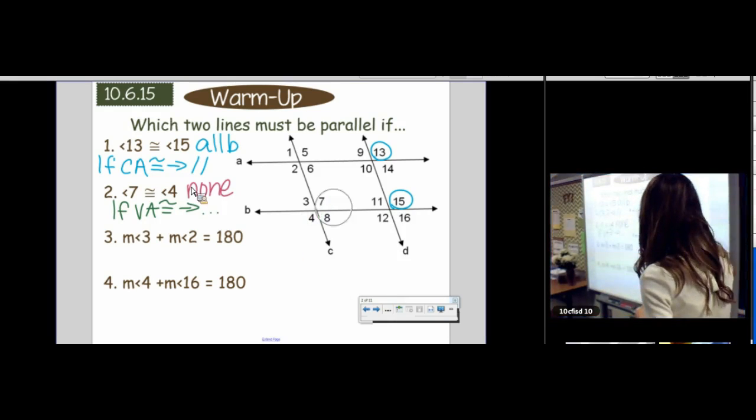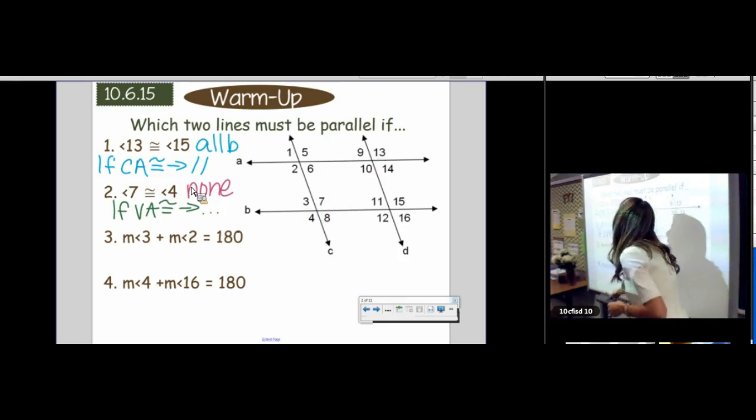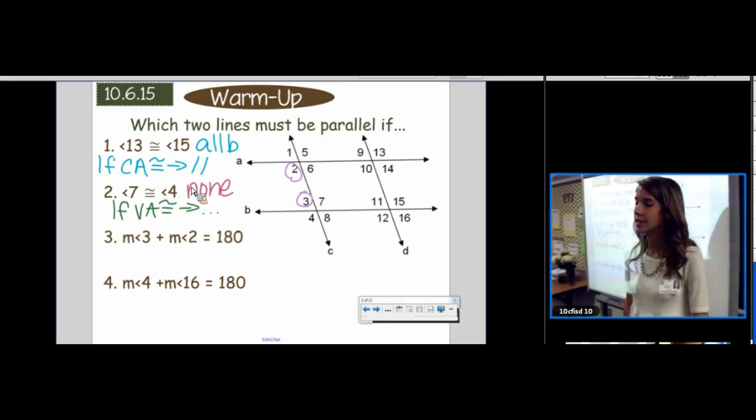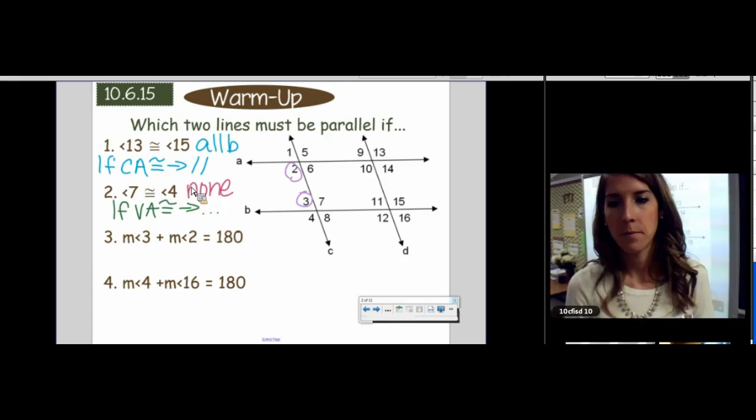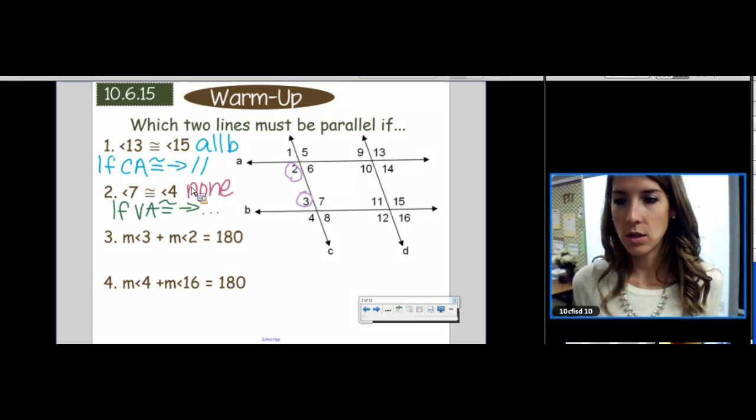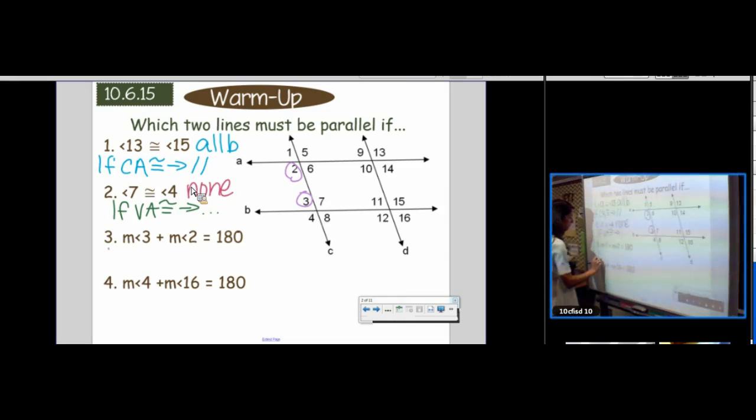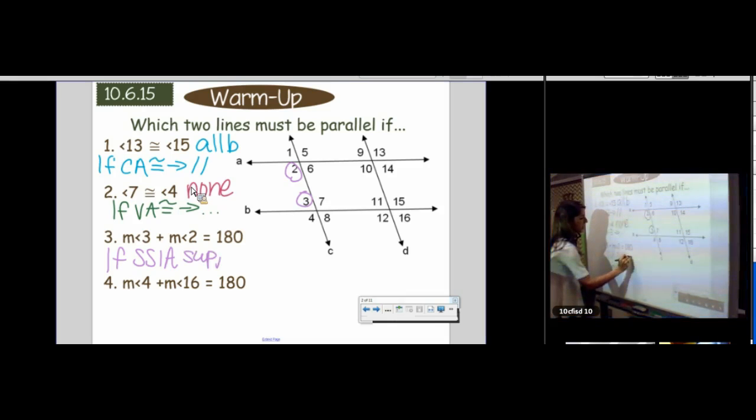Number three. Angle three and angle two are supplementary. Those are, name the vocab word, same side interior angles. And if same side interior angles are supplementary, then our lines are parallel.